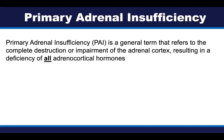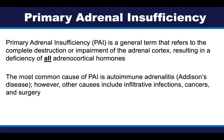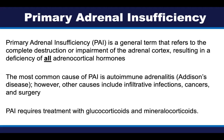Primary adrenal insufficiency is a general term that refers to the complete destruction or impairment of function of both adrenal cortices, and this results in a deficiency of all adrenocortical hormone production. The most common cause is autoimmune adrenalitis, also called Addison's disease. However, there are other causes including infiltrative infections, cancers, and surgery. Primary adrenal insufficiency is a serious condition that requires treatment with both glucocorticoids and mineralocorticoids.